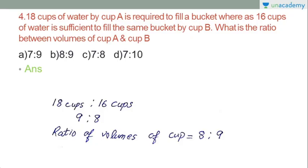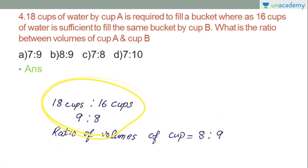The ratio for this answer will be 8 to 9 — that is the ratio between the volume of cup A and cup B.